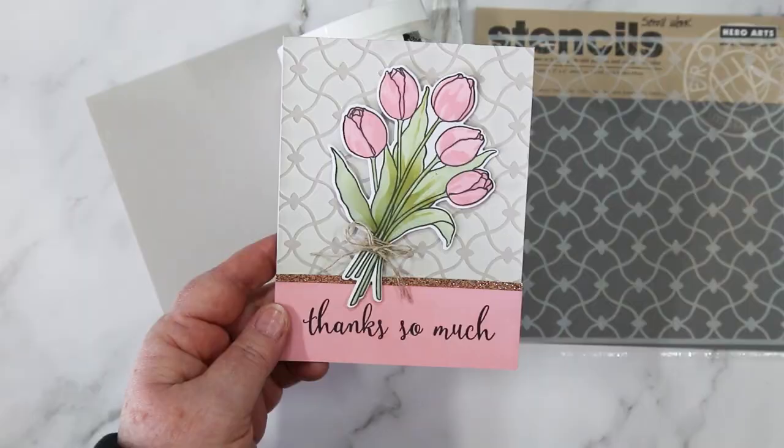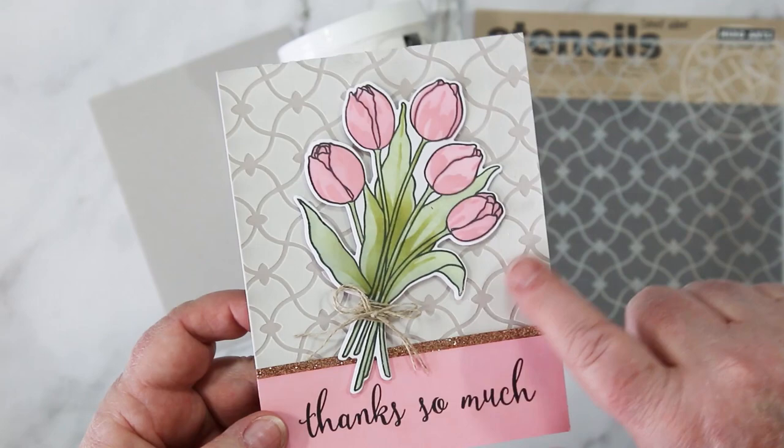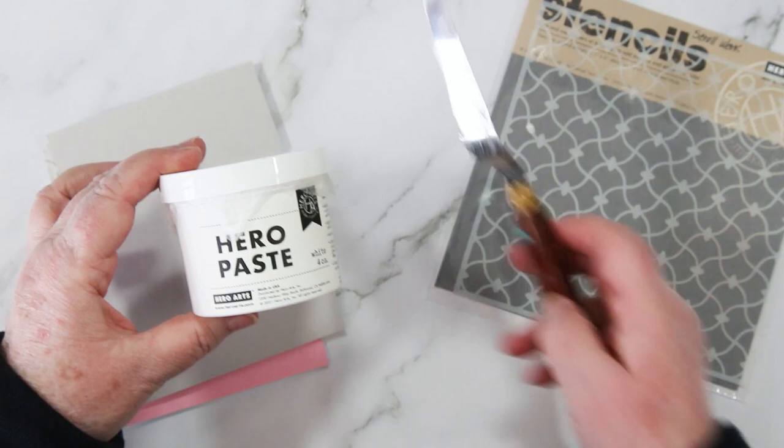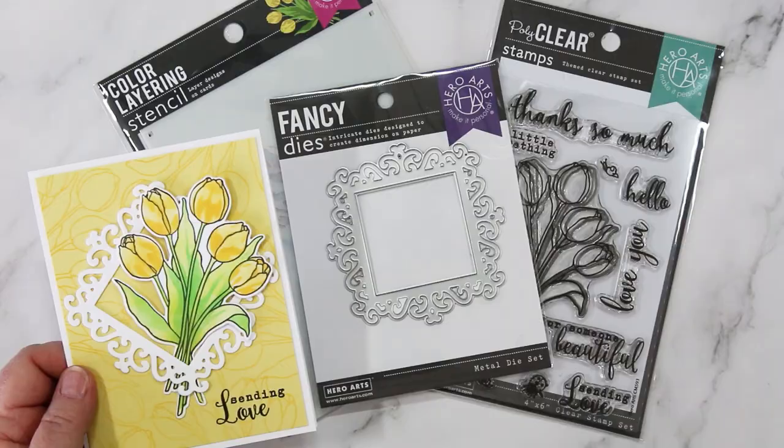For the second card I did a fancy background using the stencil scroll work and I used embossing paste through it onto some pebble cardstock to get that beautiful background. I used the Hero paste and just put it on with a knife, spread it nice and even, and you get that beautiful background. Then cotton candy fog and forever green are the inks that I used for my art piece for this one.